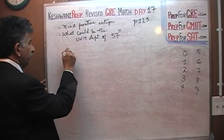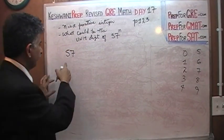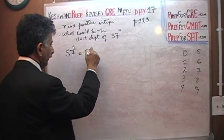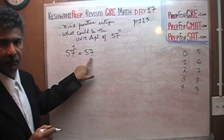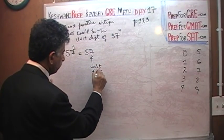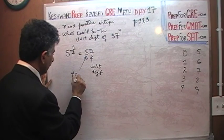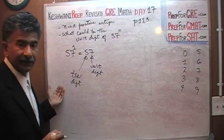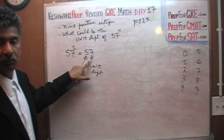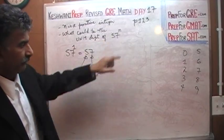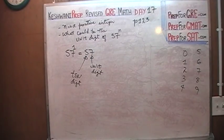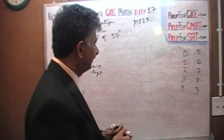So let's get going. Ask yourself, what would be the unit digit if we had 57 raised to 1? Well, 57 raised to 1 is just 57. The unit digit is 7. This is the unit digit. This is called the tens digit. The unit digit could be 7 if N happens to be 1. So that's possible.